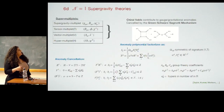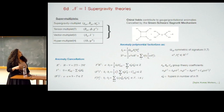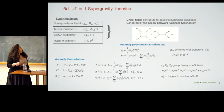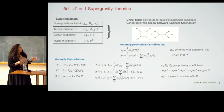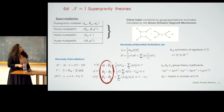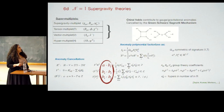Let's go to 6D minimal supergravity theories. These have eight supercharges with a supergravity multiplet, tensor multiplets, vector, and hyper, and they just have tensor branches and Higgs branches because only scalars appear. Because these are chiral theories, there are lots of constraints coming from anomalies. They're pretty much very well constrained, and there are many ways to understand how these conditions restrict your theory.